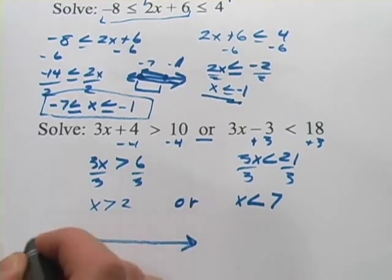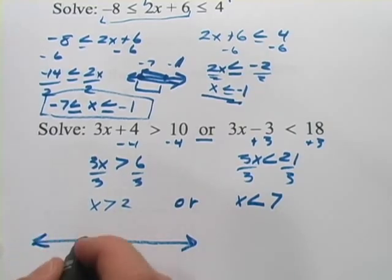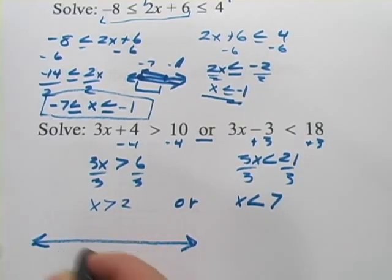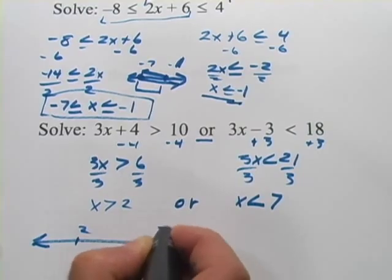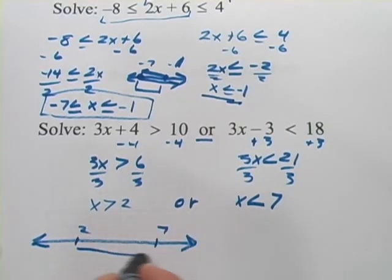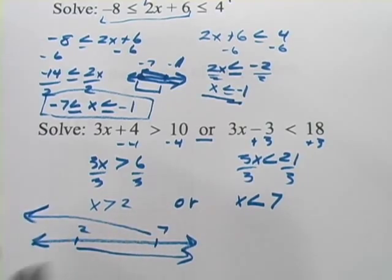So if you think about this on a number line, x, here's our 2, here's our 7, x can be greater than 2 or it can be less than 7. And if either of those things is true, then you're good. So what does that really cover here?